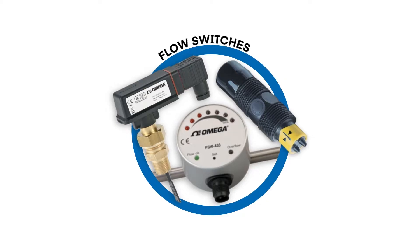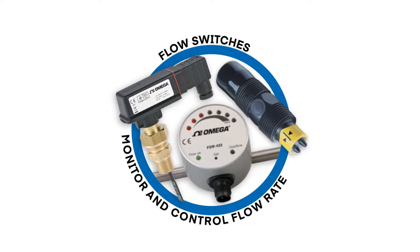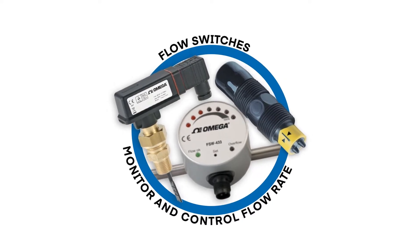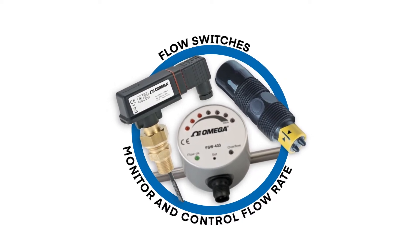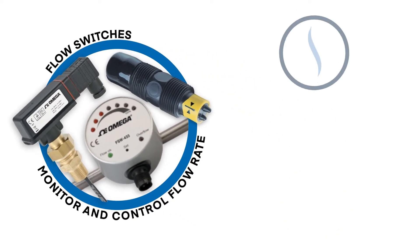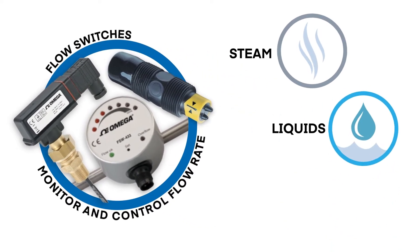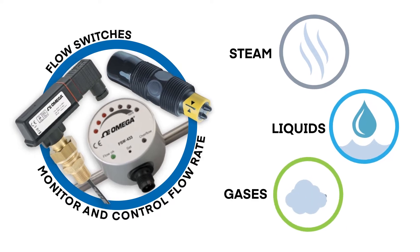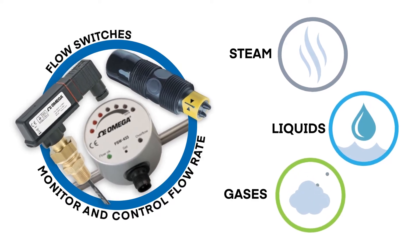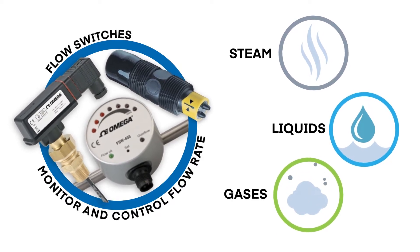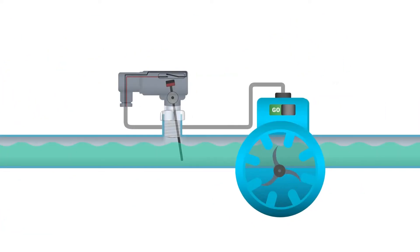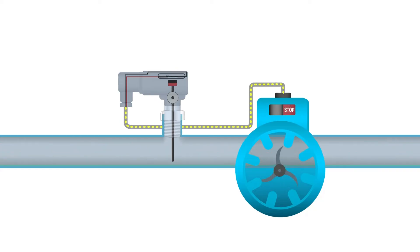A flow switch is a device that monitors and controls the flow rate of process media, such as steam, liquids, and gases, through an industrial system. It helps to maintain safe and manageable rates of flow by triggering actions within a system to provide on-off control of process media.